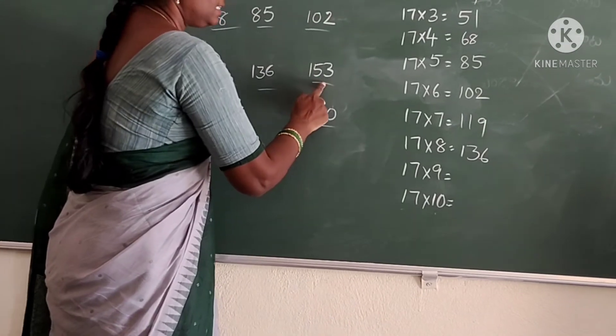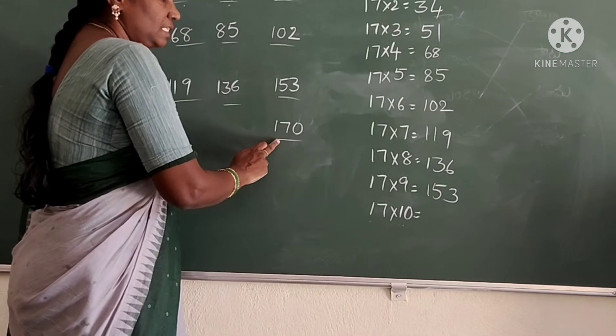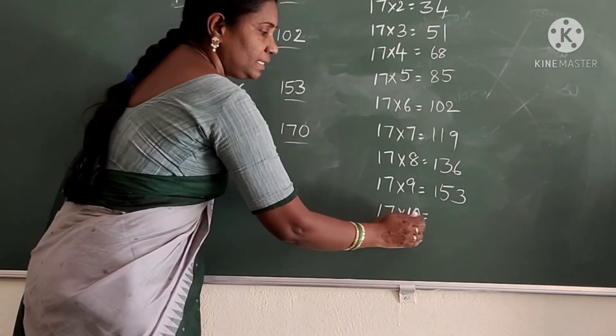17×8 is 136. And 17×9 is 153. And 17×10 is 170.